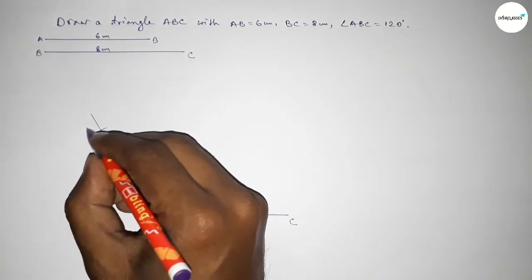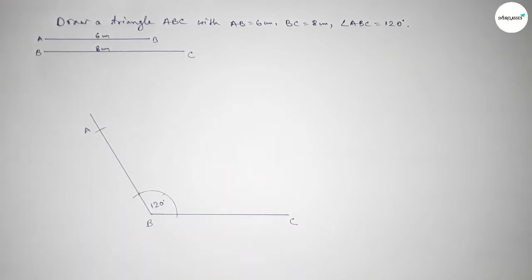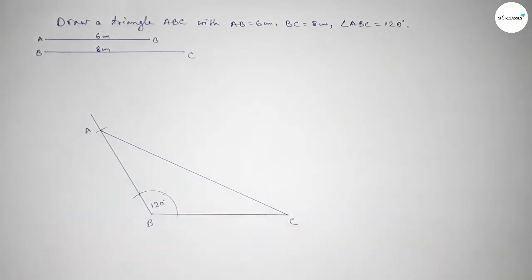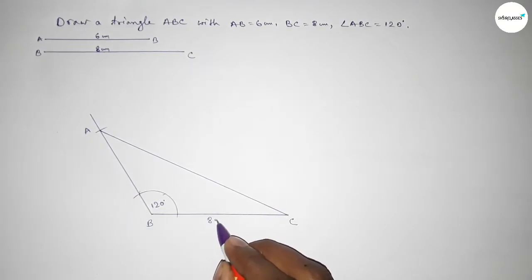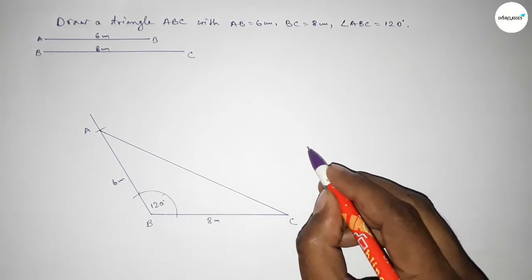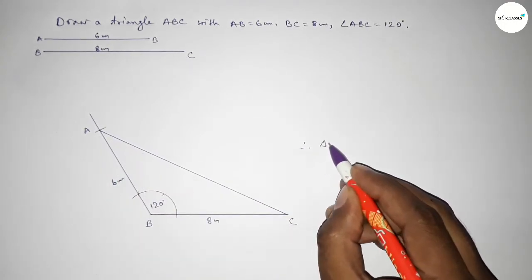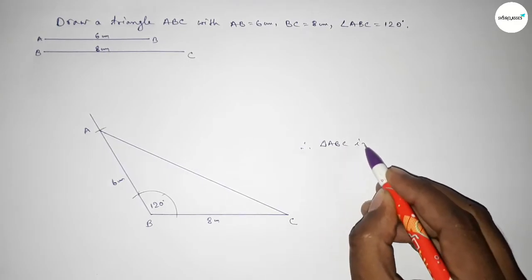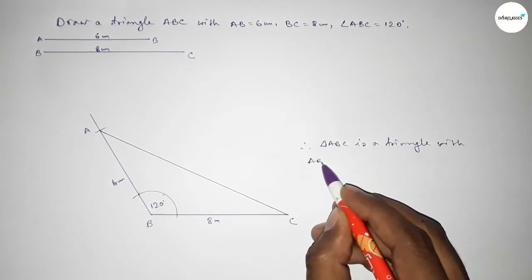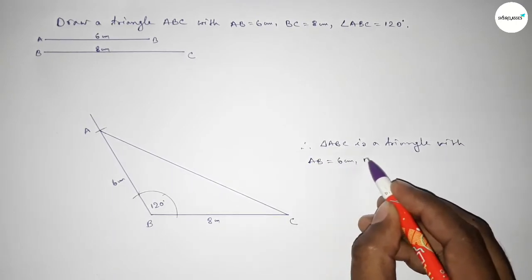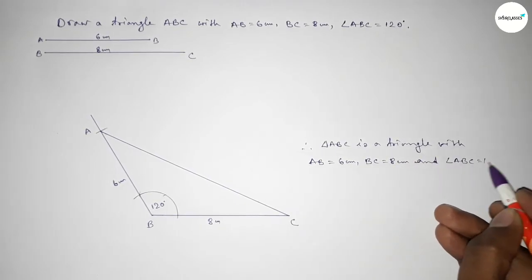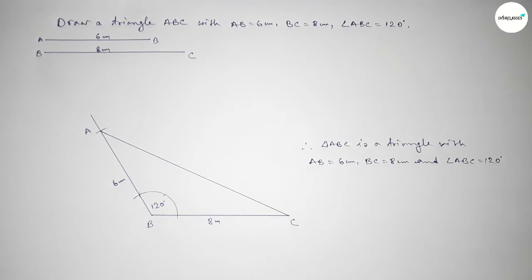Taking here point A. Now joining A and C to get the triangle ABC. So we got triangle ABC — this line is 8 centimeter and this line is 6 centimeter. Therefore triangle ABC is constructed with AB equal to 6 centimeter, BC equal to 8 centimeter, and angle ABC equal to 120 degrees.